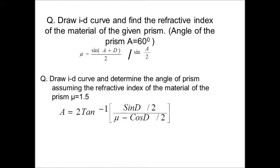Draw i-d curve and find the refractive index of the material of the given prism. Angle of the prism is 60 given. The formula is μ is equal to sin(A+D)/2 by sin(A/2). Second question: Draw i-d curve and determine angle of the prism, assuming refractive index of the material of the prism is 1.5. A is equal to 2 tan inverse sin(D/2) by μ minus cos(D/2).